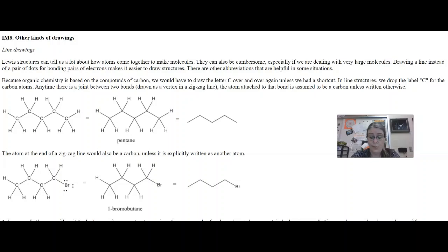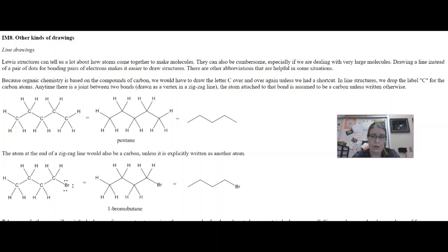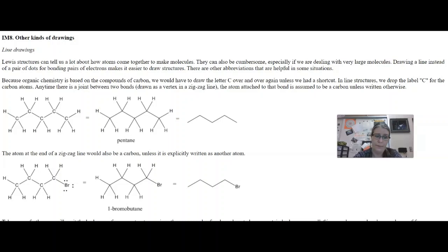This is where remembering your periodic table trends comes in handy: knowing that anything in group 17 would have three lone pairs, anything in group 16 like oxygen or sulfur would have two, and anything in group 15 like nitrogen or phosphorus would have one lone pair.